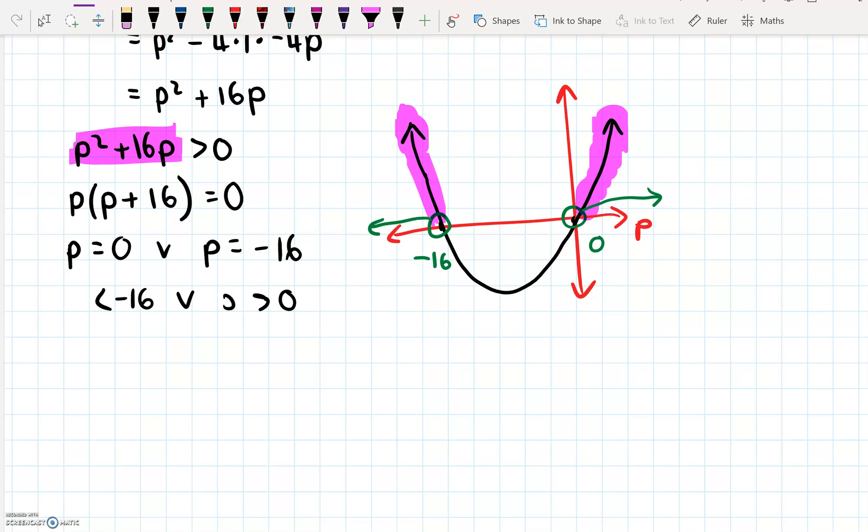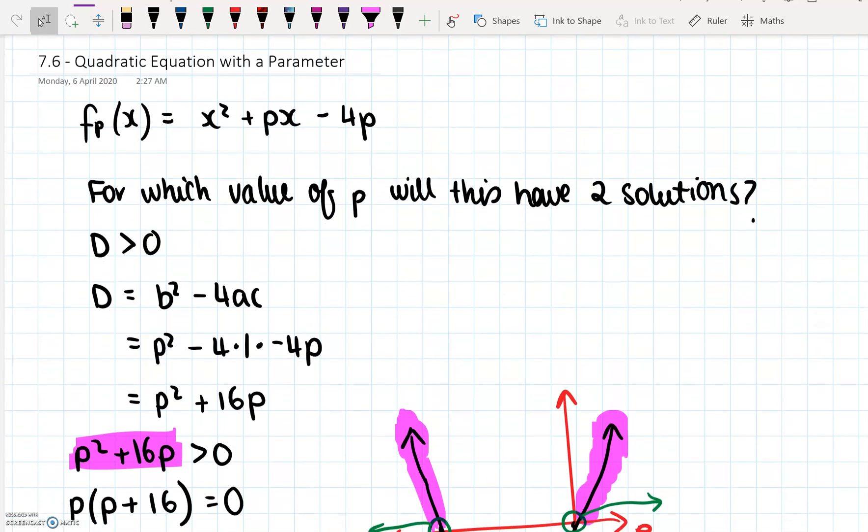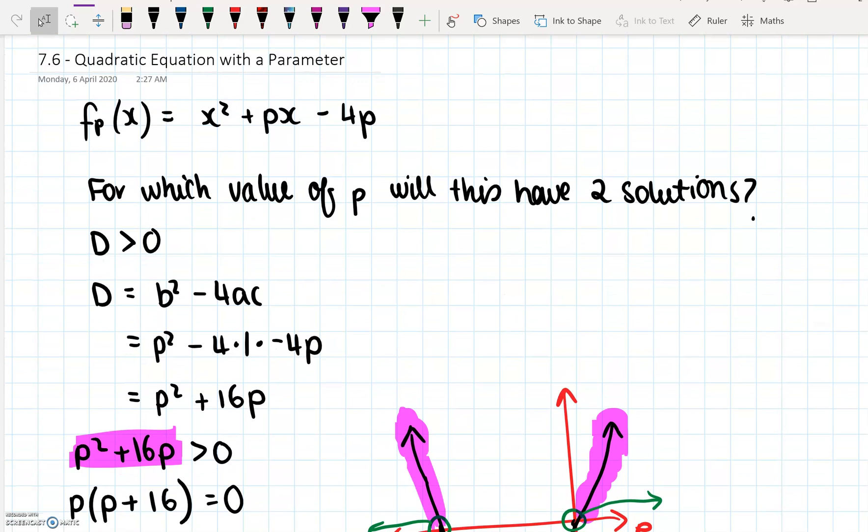Sorry, these are not x's. These should be p's. So p is less than minus 16, or p is greater than zero. Anything in those ranges, so if we make p minus 18 or minus 20, or if we make p 1 or 5, then both of those cases will give us two solutions for our original equation.